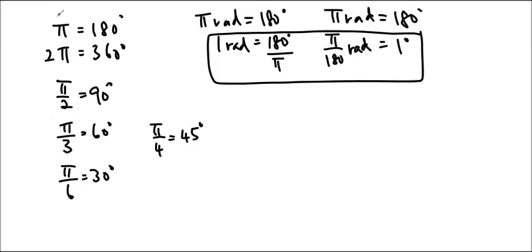So let's take a look at some of the angles we do need to memorize. Pi equals 180 degrees, we already know that, and 2 pi is equal to 360 degrees. So if we just rearrange this formula, we get 1 radian is equal to 180 over pi degrees. For inquiring minds, this is about 57.3 degrees.